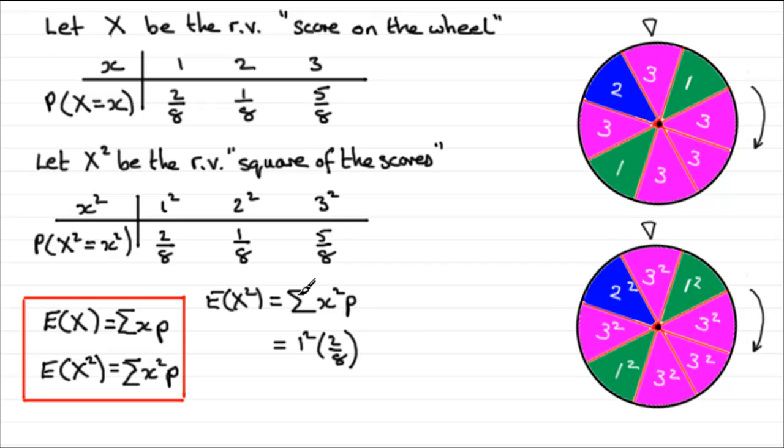And then we've got the sum of, and then we've got the next one, 2² times 1/8, and finally plus 3² times 5/8. And if you work this out on your calculator, you should find you get 51/8, or if you have it as a decimal, 6.375.